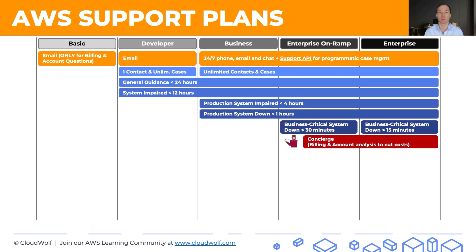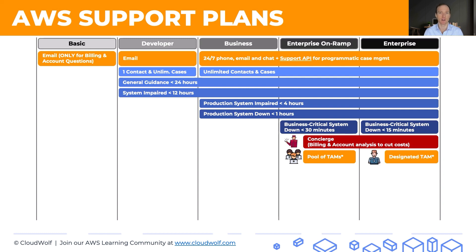Concierge services — someone who helps with billing and account analysis to cut down your costs — are available in Enterprise on Ramp and Enterprise. In Enterprise on Ramp, you get access to a pool of Technical Account Managers for architectural guidance and direction to AWS experts. In Enterprise, you get a designated Technical Account Manager who actively monitors your environment and works with you to ensure everything runs smoothly.